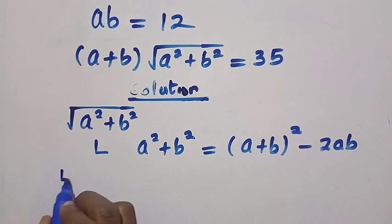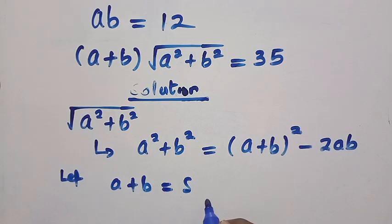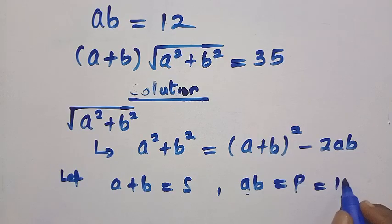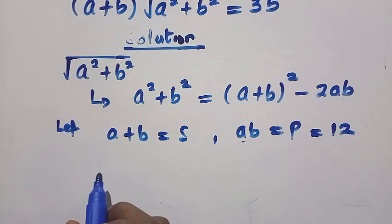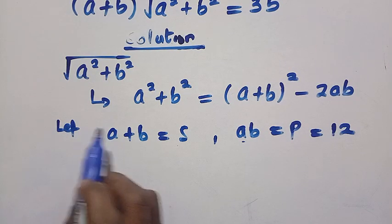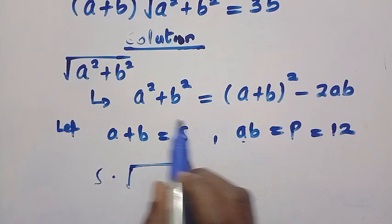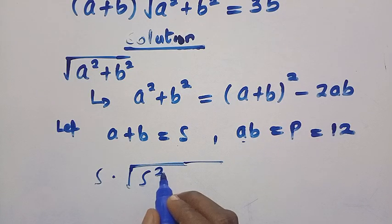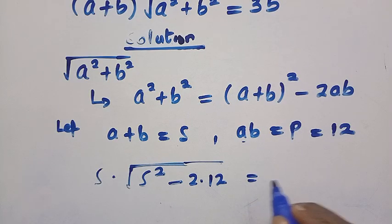Let A plus B equal X, and let AB equal P. But AB is given as 12, so we replace it. In the second equation, instead of A plus B we write X, multiplied by A squared plus B squared in brackets, which gives us X squared minus 2 times 12, equals 35.